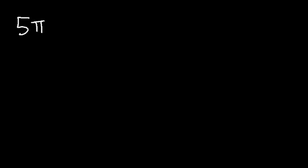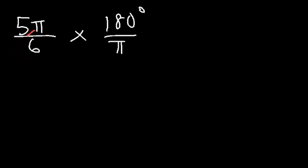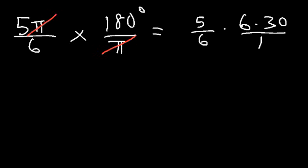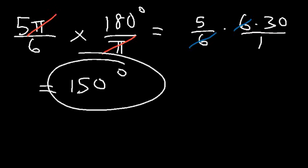Now let's work backwards. If we have the radian measure 5 pi over 6, how can we convert it to degrees? To convert to degrees, multiply by 180 over pi — so that the pi symbol cancels. Now we have 5 divided by 6, times 180. Since 180 is 6 times 30, we can cancel a 6. Then 5 times 30 is 150. So the answer is 150 degrees.